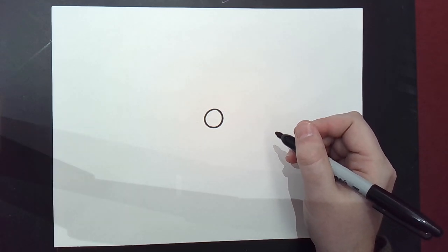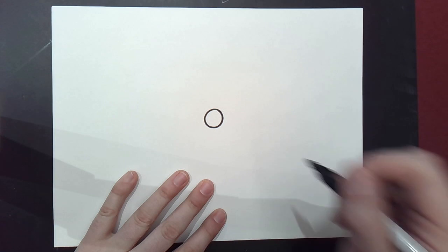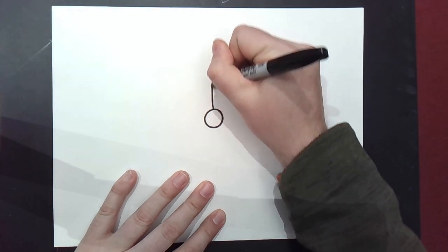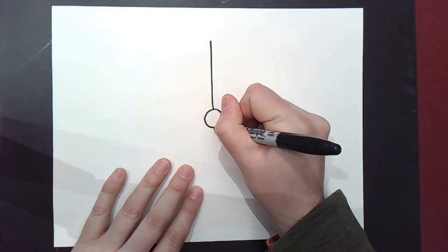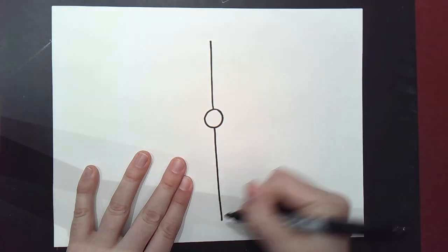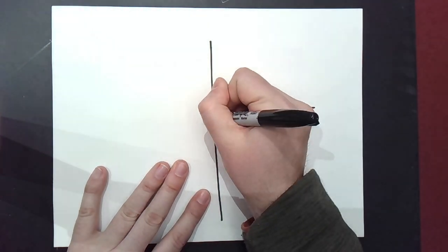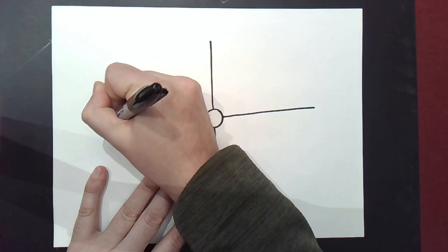And next, we're going to make a plus sign. So I want to go up toward the edge of my page, down toward the edge of my page, over toward the edge of my page, and the other direction.